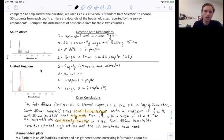Next, we compare their centers. So the center was six people in South Africa versus four people in the United Kingdom. What does that mean? It means household sizes in South Africa tend to be or are typically larger. Next, let's compare their spread.